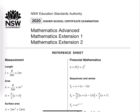Hi, today I'm going to talk about HTC Reference Sheets. Let's write down some notes. The HTC Reference Sheets has four pages containing Advanced Course, Extension 1, and Extension 2. I'm going to separate them into four separate parts. So this is part one. Let's start.